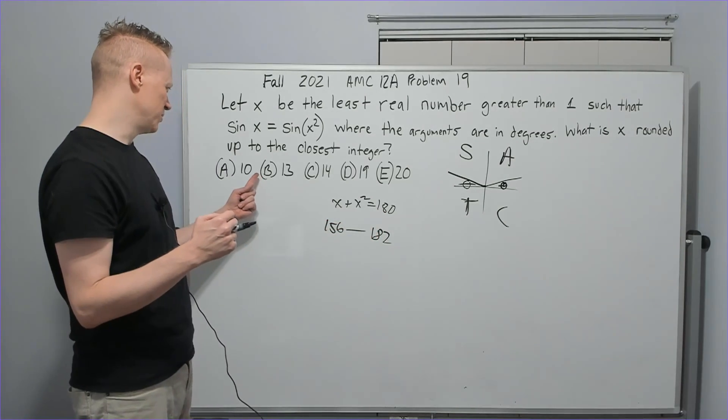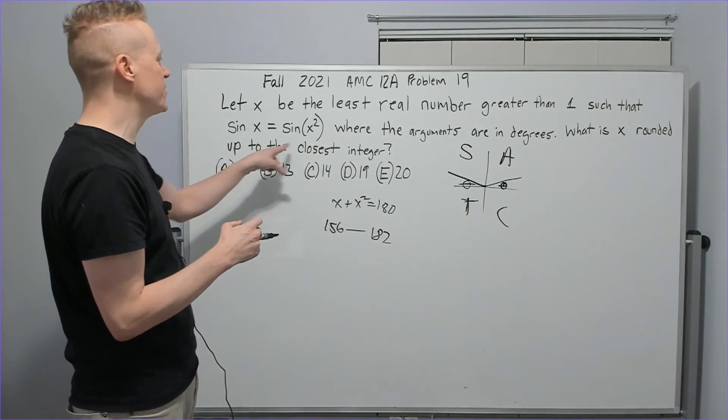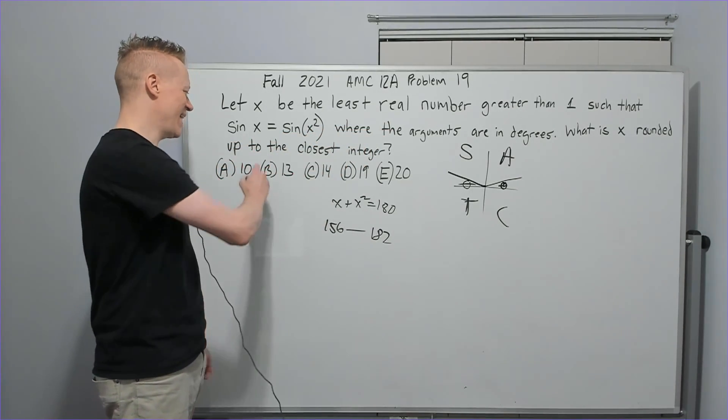And there is no 11 even here or 12 here as an answer. So it says rounded up to the closest integer. Even that, yeah, it's 13.